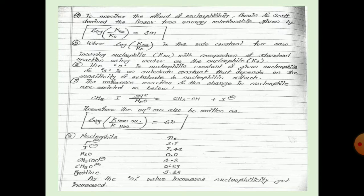S is the substrate constant that depends upon the sensitivity of the substrate to nucleophile attack. The reference reaction, the change in nucleophile, is CH3I with SN2 and H2O molecule, then we get CH3OH plus I minus. Therefore the equation is also written as log K_nucleophile/KH2O equals SN. The nucleophiles F minus, I minus, H2O, CH3COO minus, CH3O minus, pyridine have N values 2.7, 7.4, 2.0, 4.3, 6.29, 5.23. As the N value increases, the nucleophilicity gets increased.